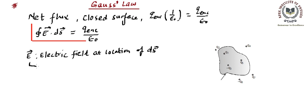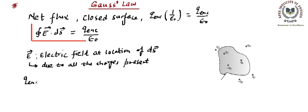Moreover, this field E is due to all the charges present — that means whether the charges are inside the closed surface or outside the closed surface. And dS is the differential surface element. So the left hand side is the total flux passing through the closed surface, whereas on the right hand side Q enclosed counts only the net charge which is inside the closed surface.